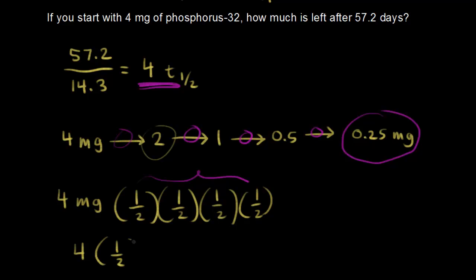Which mathematically is four times one over sixteen. So that's four-sixteenths, which is the same thing as one-fourth. That's 0.25 milligrams.